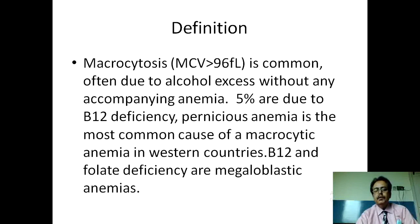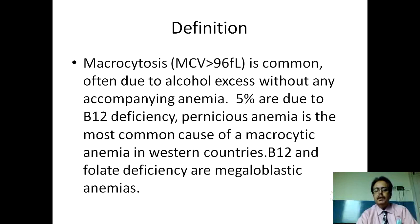The definition of macrocytic anemia: macrocytosis is defined as a mean corpuscular volume greater than 96 femtoliters. It is very common, often due to alcohol abuse without any accompanying anemia. Of these macrocytic anemias, 5% of cases are due to vitamin B12 deficiency, and pernicious anemia is one of the most common macrocytic anemias in western countries, but not in our region.